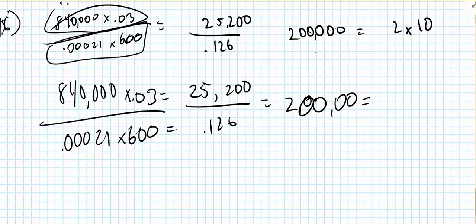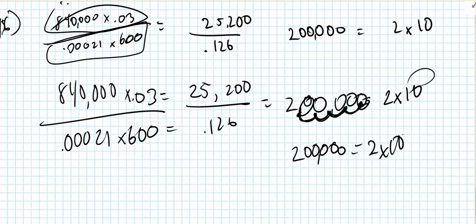200,000 in scientific notation is 2 times 10 to the... to find what the exponent is, you just put a decimal here and move to the right: one, two, three, four, five. So 200,000 equals 2 times 10 to the fifth power.